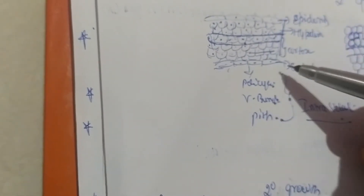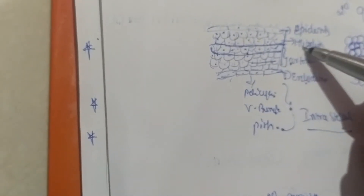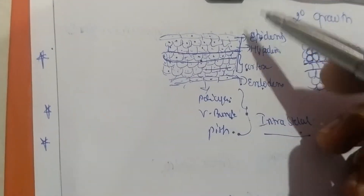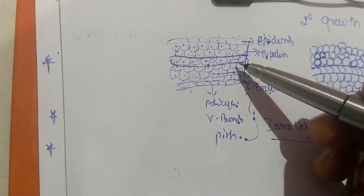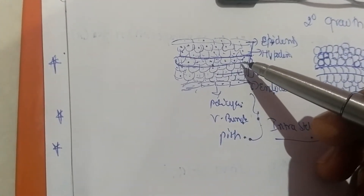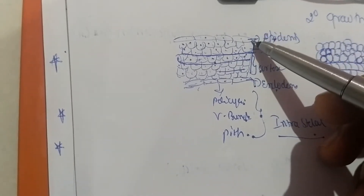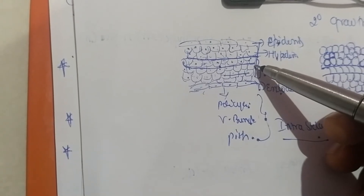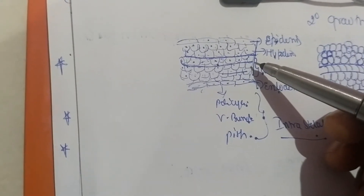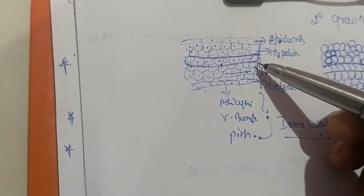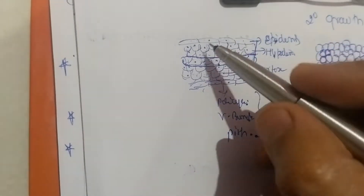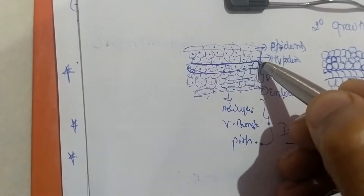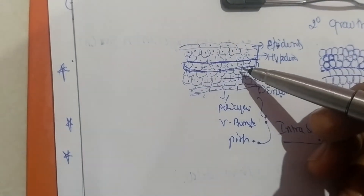The region just above the endodermis — cortex, hypodermis, and epidermis — together constitutes the extrastele region. So we are going to see secondary growth in the extrastele region. We have the outermost layer as epidermis, followed by hypodermis. Inner to hypodermis is the cortical region, which is usually made up of loosely arranged parenchyma cells. A single layer of this cortical region is going to de-differentiate.